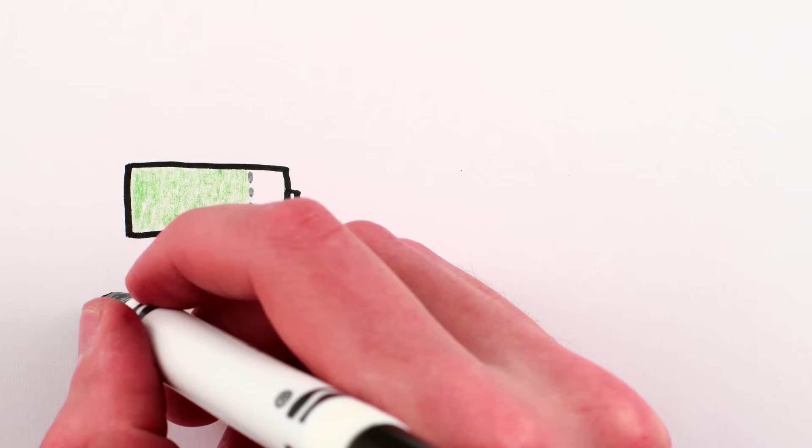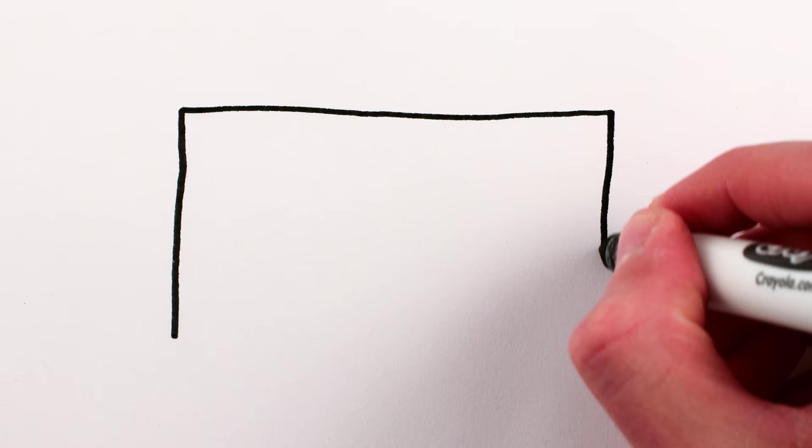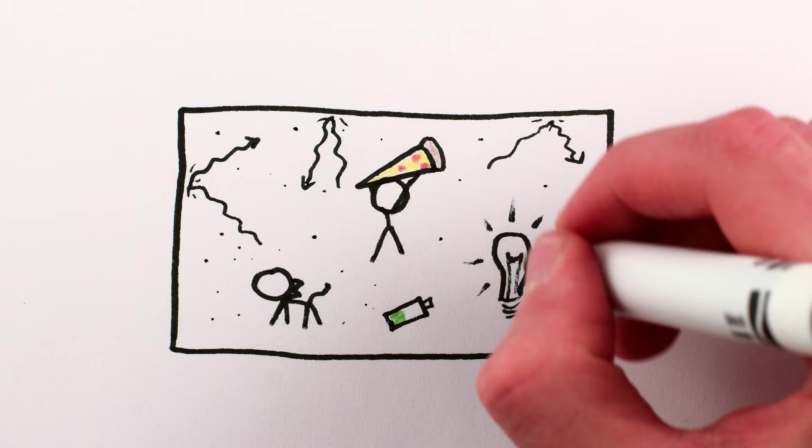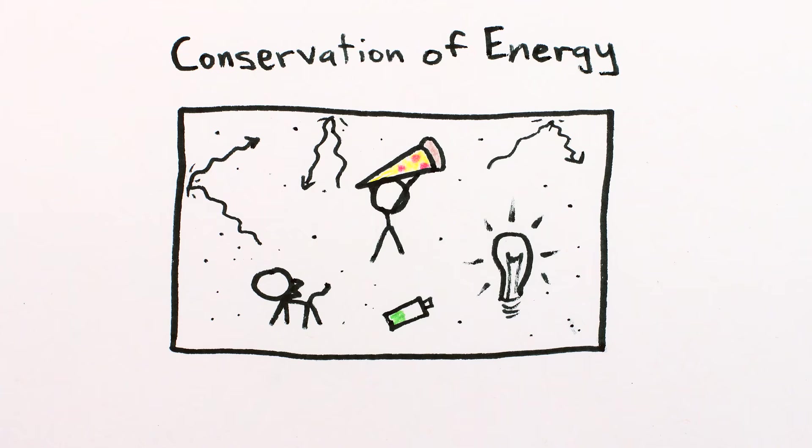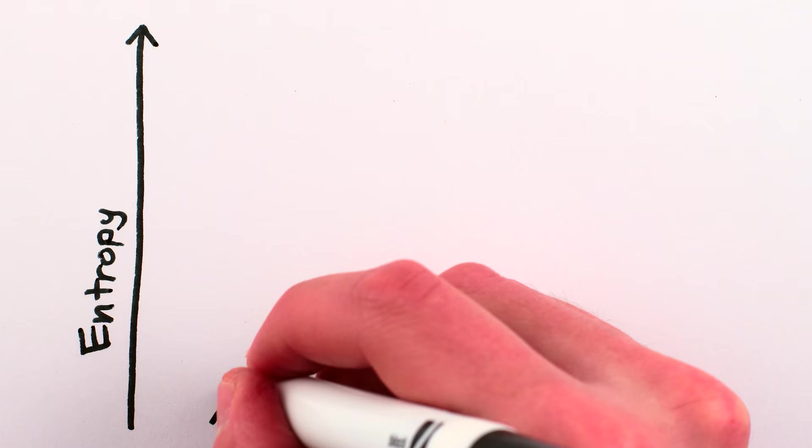What matters, it turns out, isn't simply energy, it's useful energy. And energy is useful when it comes packaged in a low-entropy form. The total amount of energy in any closed system can't change, of course. Energy is conserved. But that energy can be in different states of usefulness.